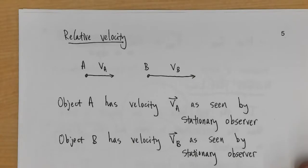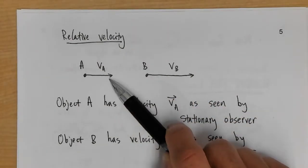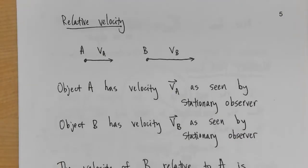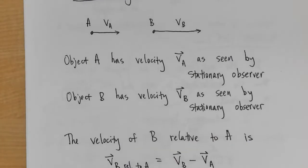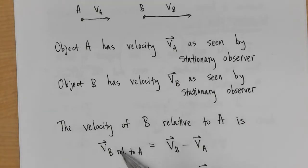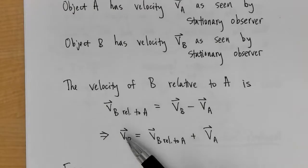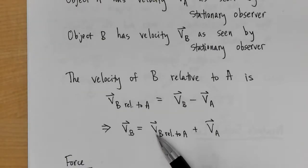The next topic is relative velocity. If object A has velocity VA and object B has velocity VB, both as seen by a stationary observer, then the velocity of B relative to A is VB − VA. Equivalently, VB equals VA plus the velocity of B relative to A.